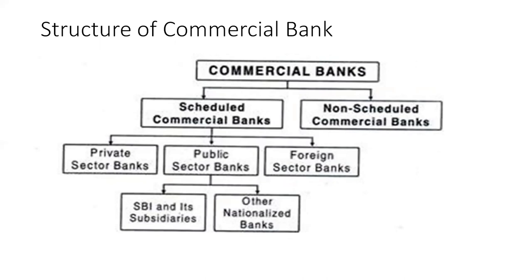There are non-scheduled commercial banks as well — certain small banks operating in rural areas whose paid-up share capital is less than 5 lakhs do not fall under full RBI control. Some credit cooperative societies in rural areas with capital below 5 lakhs are not scheduled banks; they work under urban cooperative banks or apex cooperative banks. These are called non-scheduled banks, but in the commercial banking sector, non-scheduled banks are very few.